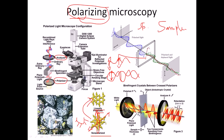In polarizing microscopy, the sample is a little different from the conventional sample used in general light microscopy. In this case, we have to use a birefringent sample or birefringent specimen. In simple words, the specimen normally has a crystal structure — it is a dense or viscous medium made up of anisotropic substances.